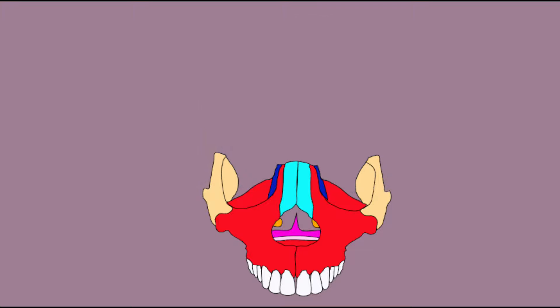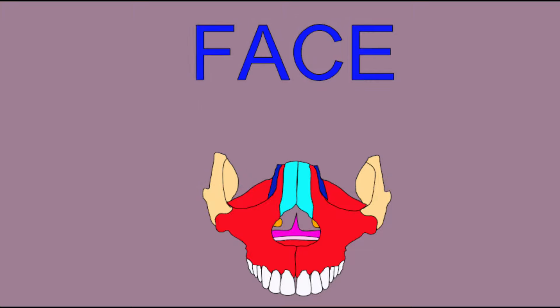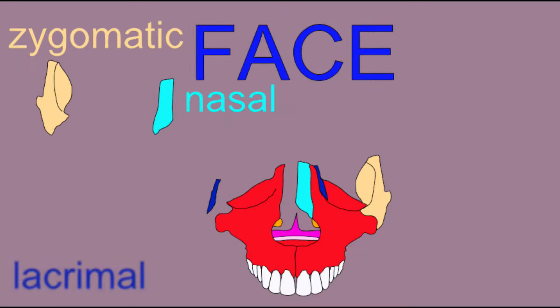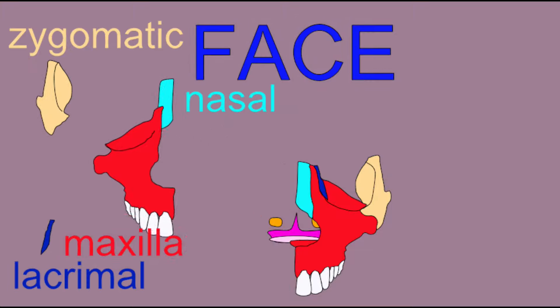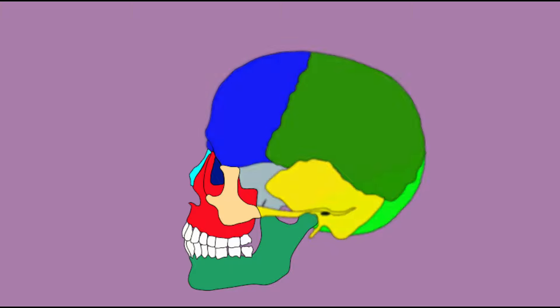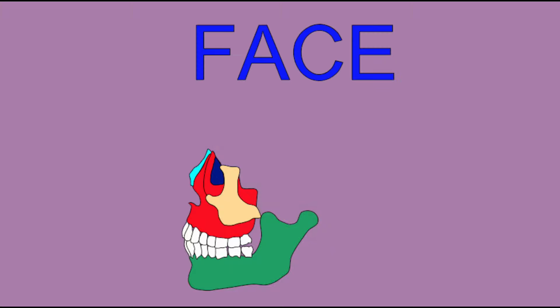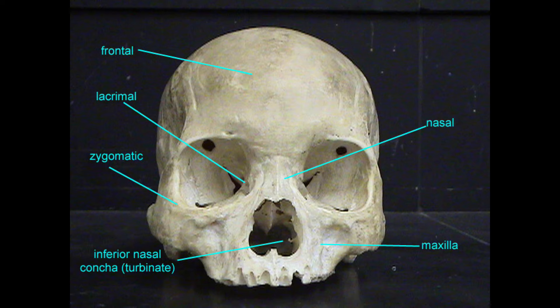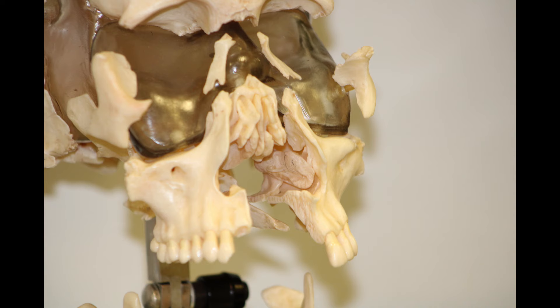The maxillary bones form the upper jaw and hold all the teeth of the upper jaw. Maxillary bones form the lateral wall of the nasal cavity and the medial and inferior wall of the orbit.